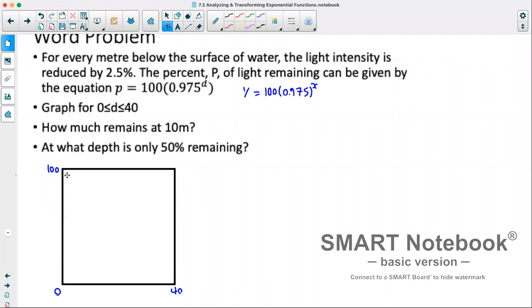So we'll enter this in our calculator as y is equal to 100 times 0.975 to the power of x. Now when we graph this, we end up with something that looks roughly like this. Now we want to know how much light remains at 10 meters. For that, we can just enter that into our equation. So we've got y equals 100 times 0.975 to the power of 10. And that will give us 77.6%.